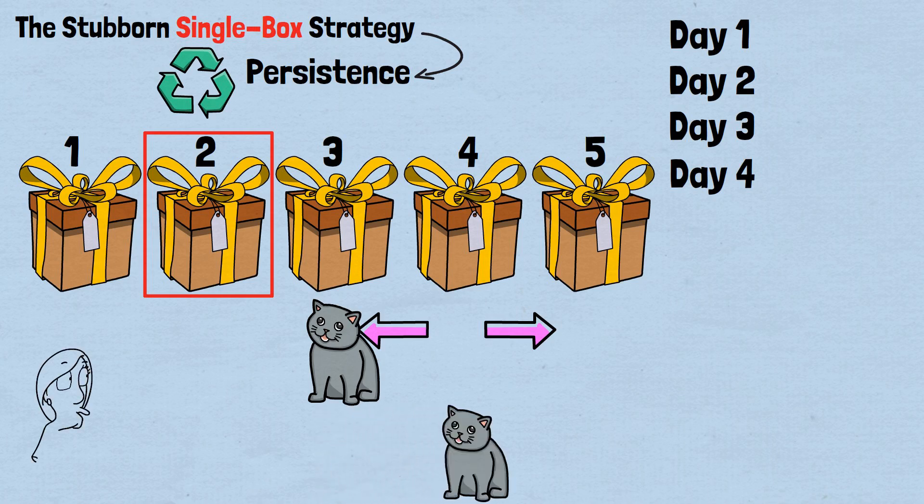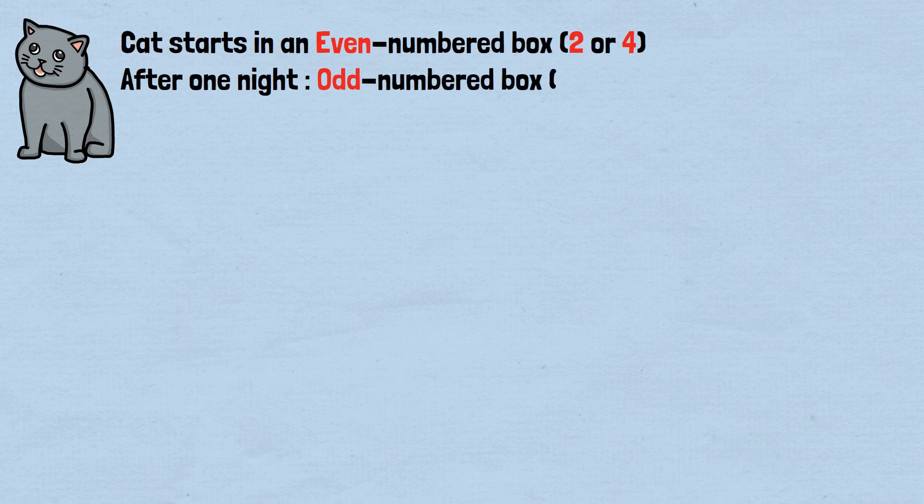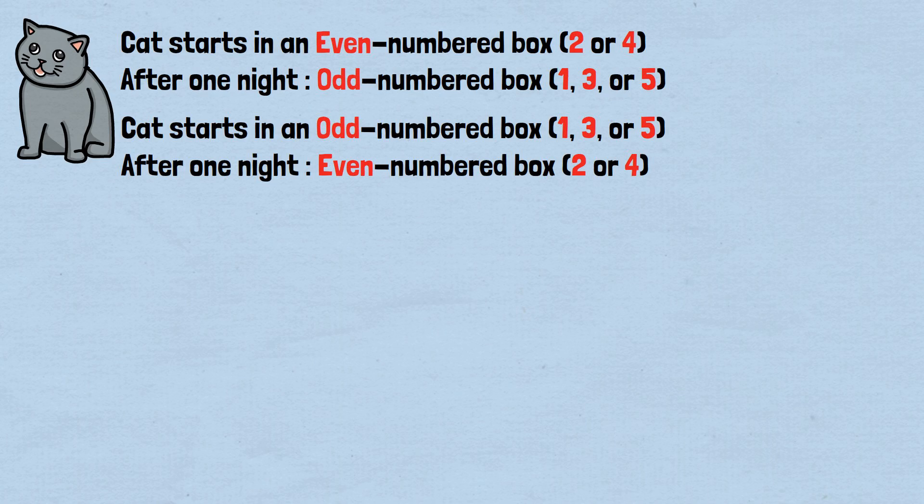The key insight that unlocks this puzzle lies in recognizing a fundamental mathematical property: parity. In mathematics, parity refers to whether a number is even or odd. Let's trace what happens to the cat's location over time. If the cat starts in an even-numbered box, 2 or 4, after one night of movement, it must be in an odd-numbered box, 1, 3, or 5. If the cat starts in an odd-numbered box, 1, 3, or 5, after one night of movement, it must be in an even-numbered box, 2 or 4.